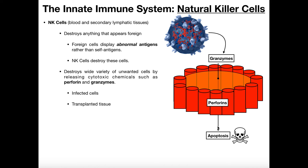To conceptualize it: once natural killer cells recognize a foreign or abnormal cell, they take a drill and drill right through the cell membrane, creating a hole. Then it's like they dump salt in the wound — they dump granzymes in through the hole, and that's what ultimately kills the cell.